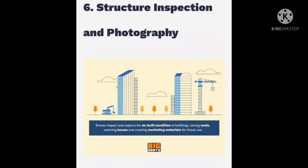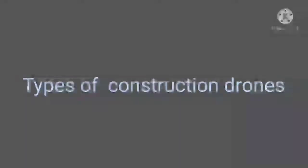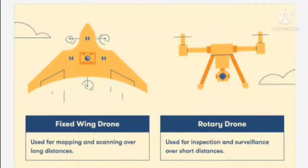Types of construction drones: The first is the fixed-wing drone, and the second is the rotary drone. Fixed-wing drones are used for mapping and scanning over long distances, while rotary drones are used for inspection and surveillance over short distances.